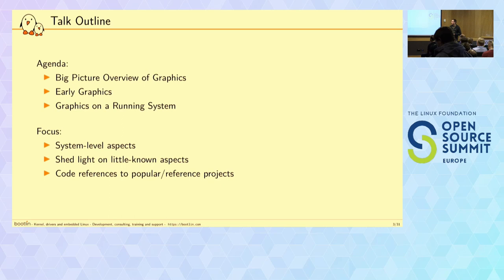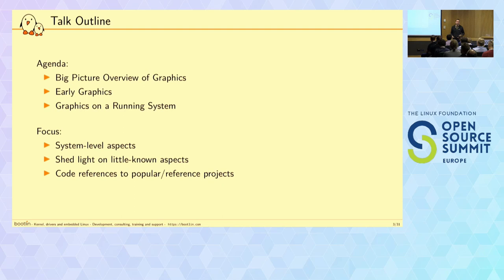I'm going to shed some light on little-known aspects — things that are usually not really well-known or kind of hidden under the hood. I'll also try to give you references to popular free software projects like Weston or the Linux kernel, to give you some pointers on where you can look for more details. You can basically look at the files and functions that I'm listing to see how it's done and the actual code that runs. So let's start with that big picture overview.